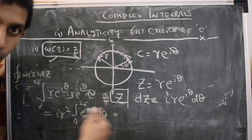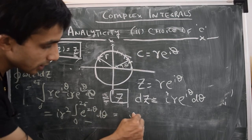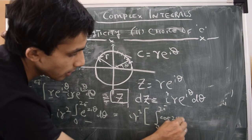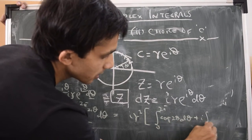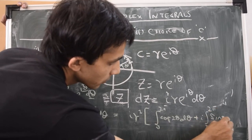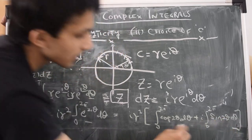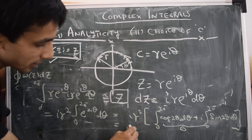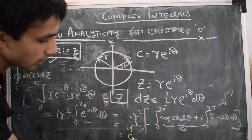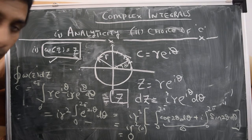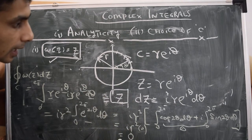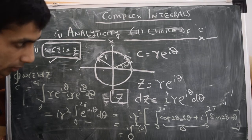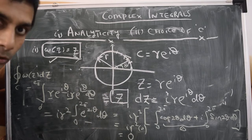Decomposing e^(2iθ) = cos(2θ) + i sin(2θ), the integral becomes i r² ∫₀²π [cos(2θ) + i sin(2θ)] dθ. Both the cosine and sine integrals over a full period vanish, giving 0. So the contour integral of W(z) = z over the circular contour is also 0, again agreeing with Cauchy's integral theorem.